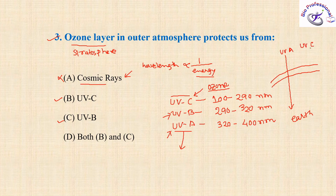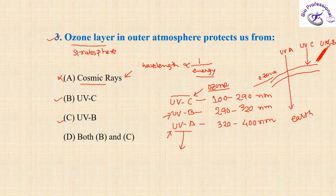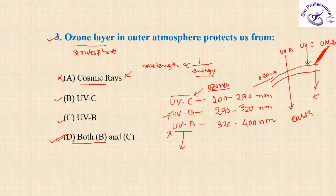UVC cannot reach Earth because all UVC radiation is absorbed by the ozone layer. UVB — some part will reach Earth, and this is the reason this type of radiation can cause skin cancer. So the answer is option D — both UVB and UVC — because the ozone layer protects us from both UVB and UVC.